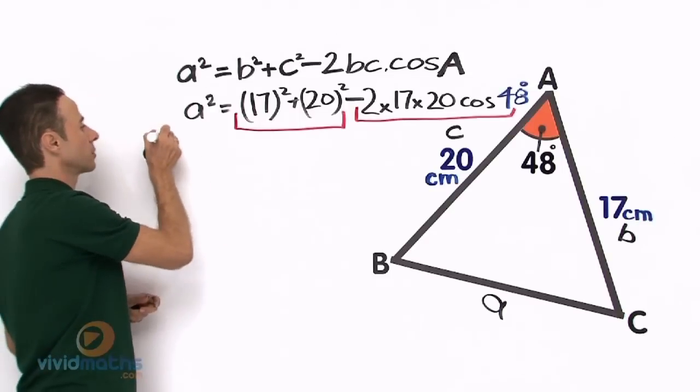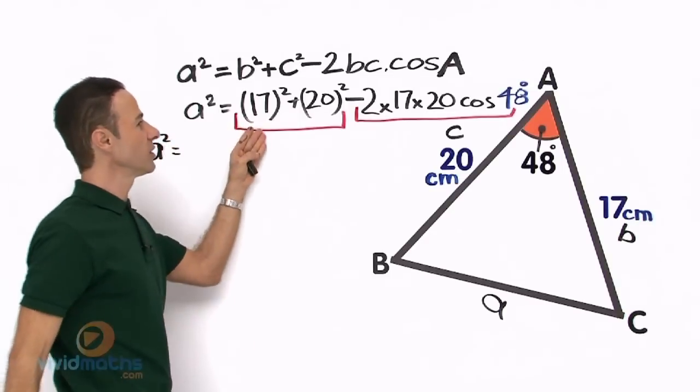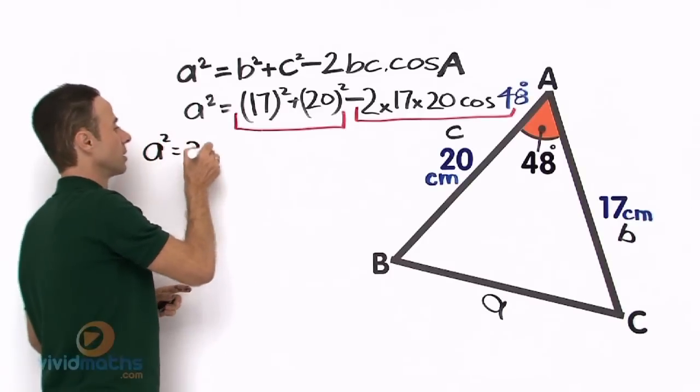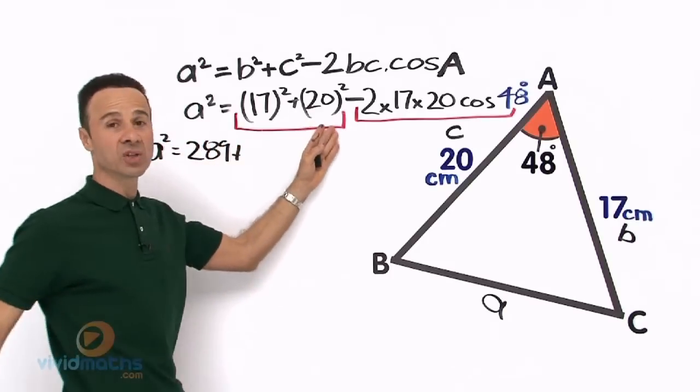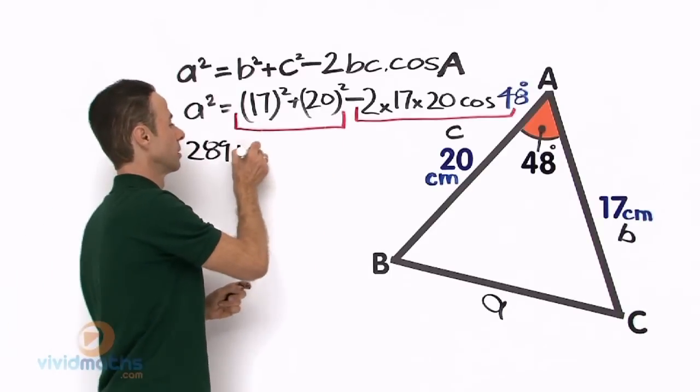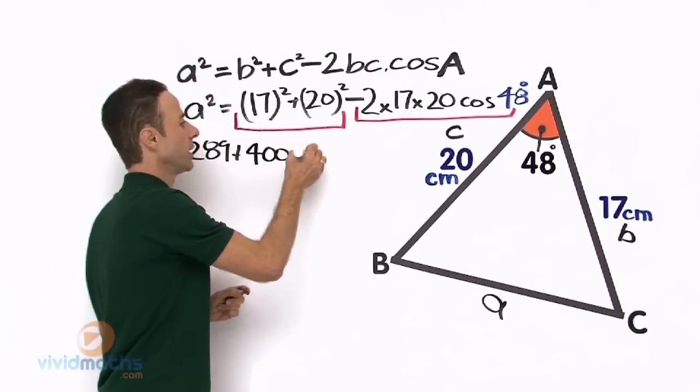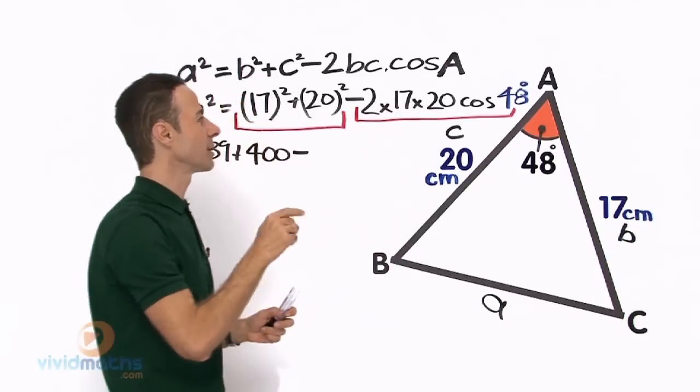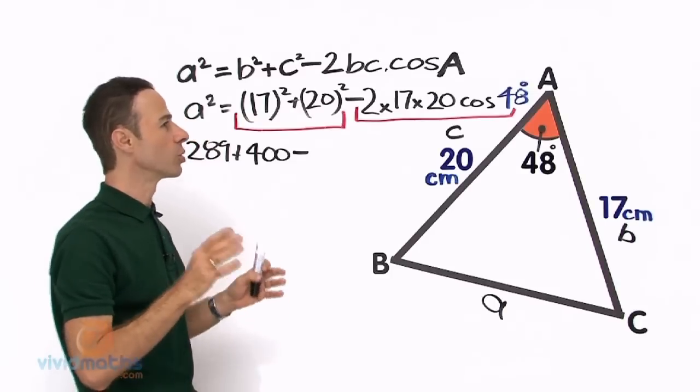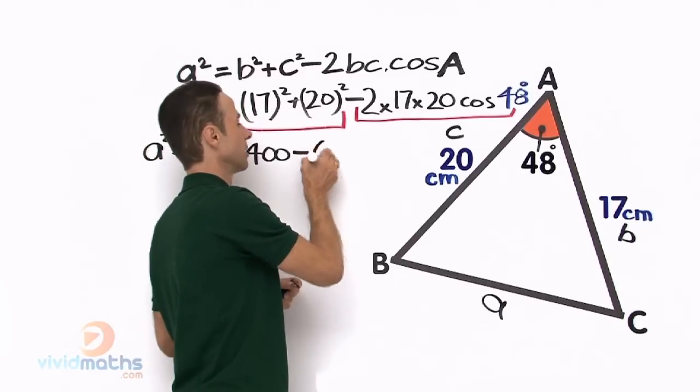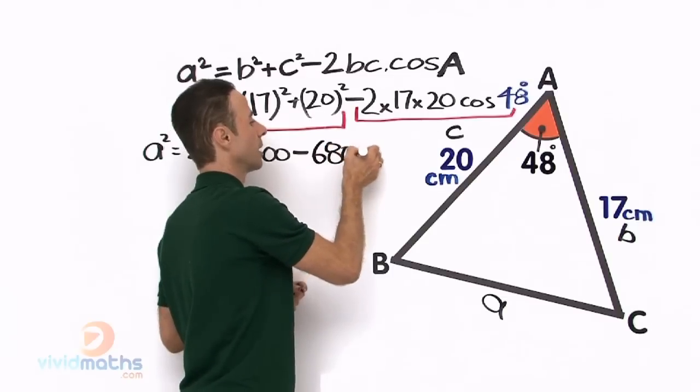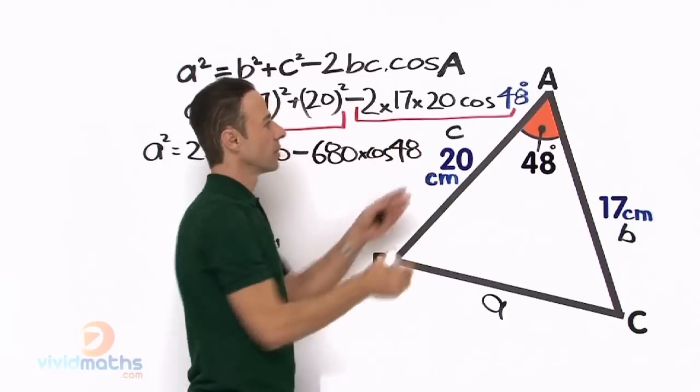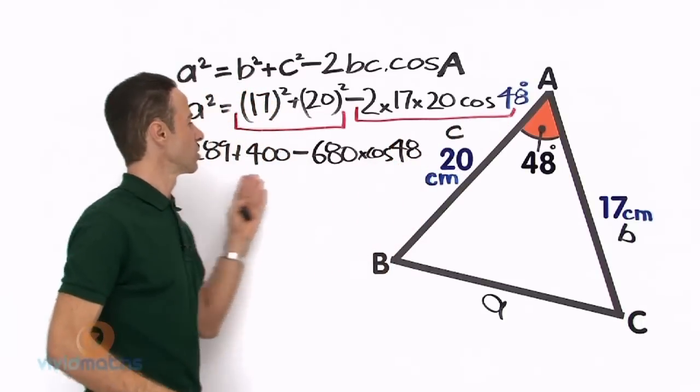So a² is equal to 17² in the calculator will yield 289 plus 20² in the calculator is 400 minus. Let us go for the second part of the formula here. Now we got 2 times 17 times 20. Now on your calculator, just that part will yield you 680 times cos. What is that, cos 48? Yeah. There is the cos 48, there it is there. So we got the two sections there.